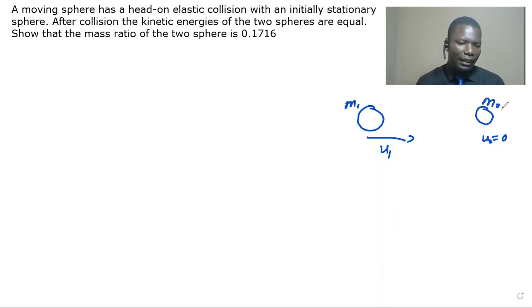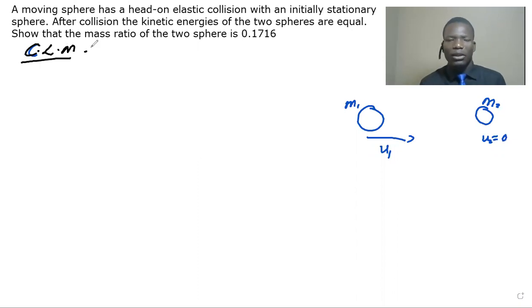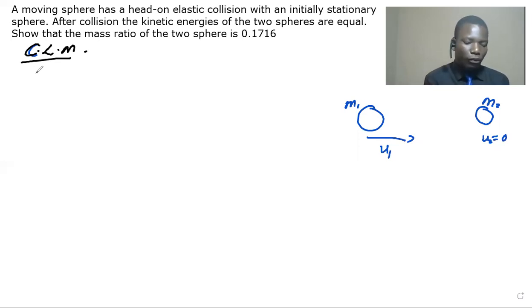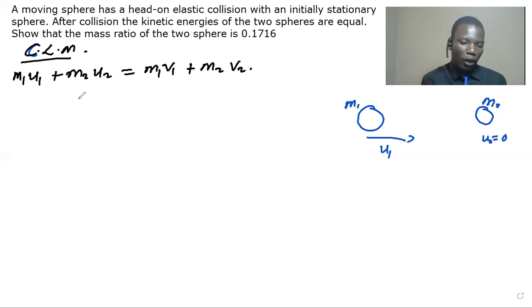We start by applying conservation of linear momentum. The summation of initial momentum should be equal to the final momentum in the system. Mass 2 was initially at rest, so its initial momentum term is equal to 0. Let this be equation 1.